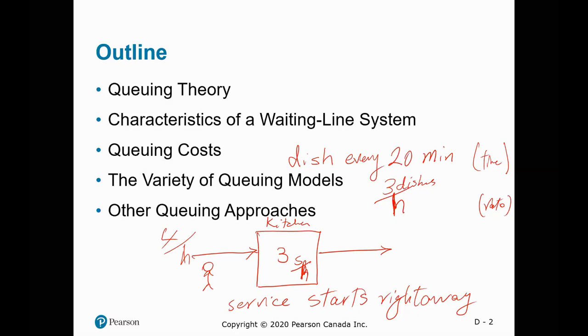But if four people arrive every hour, then it is obvious that there would be a problem. If four people arrive per hour and we can only serve three people per hour, it's obvious there would be a queue, a wait line — a build-up in front of this process. And that is what we want to basically understand.